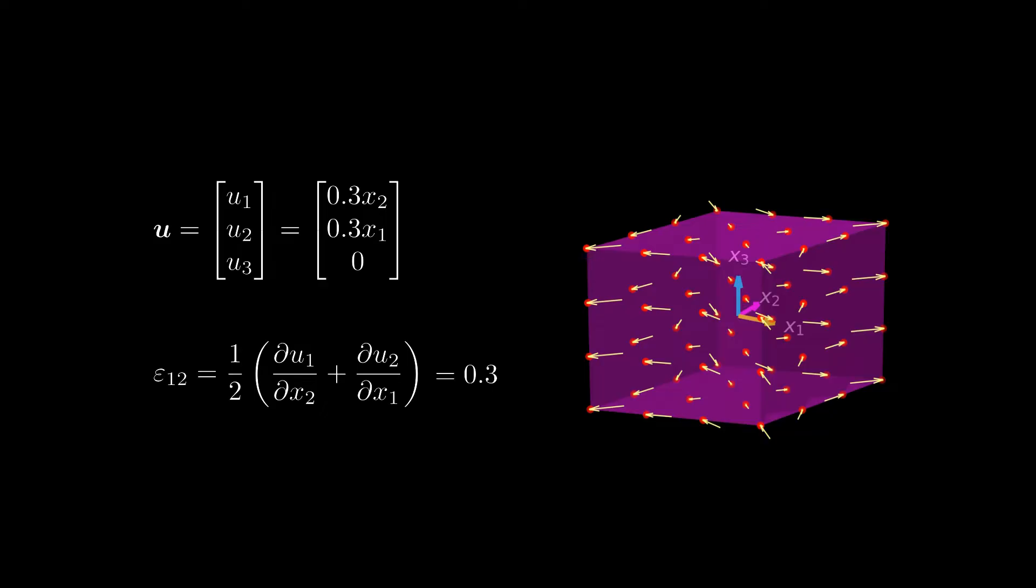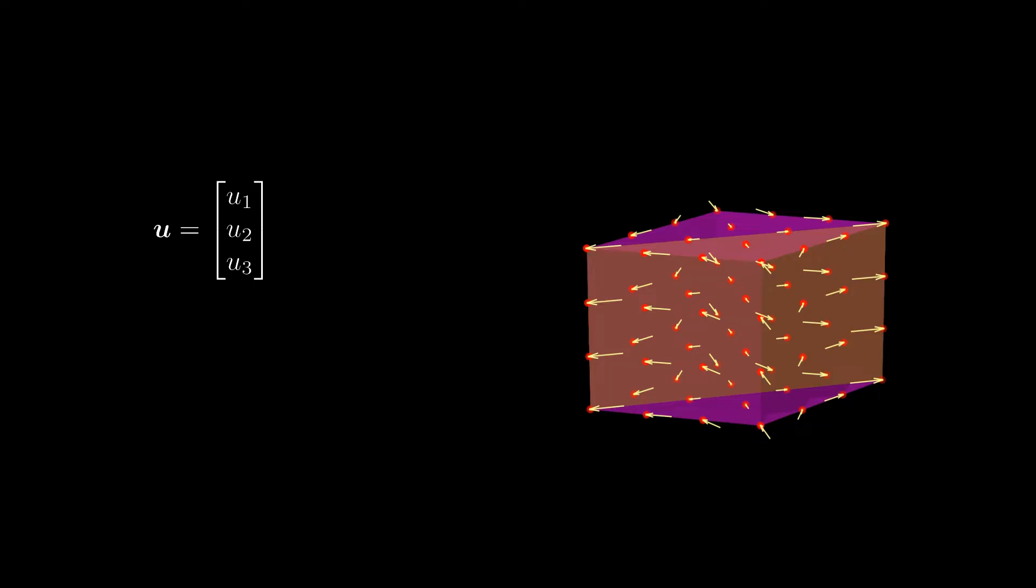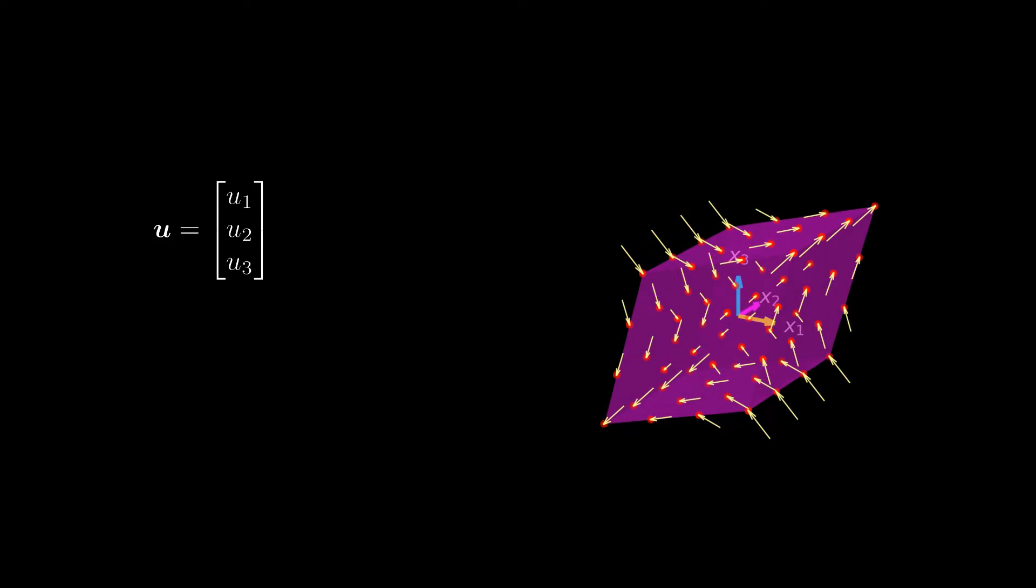A value of 0.3 for epsilon 12 means that the diagonal plane that is aligned with a 45 degree angle between x1 and x2 elongates by 30%. Finally we can do similar considerations for the strain components epsilon 13 and epsilon 23.